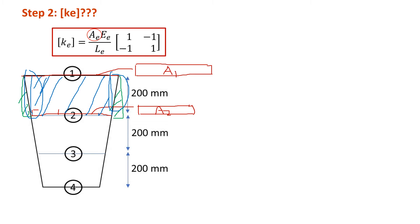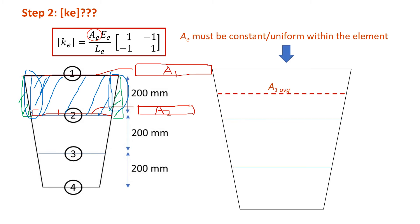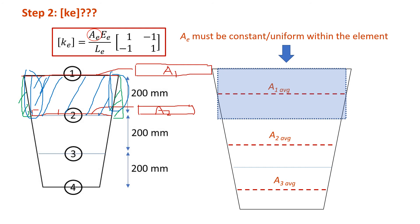The best A to use is the average A — the one in the middle — for element 2 and element 3. This way, our element representation removes some material on one side but adds some on the other, so the error is balanced out.